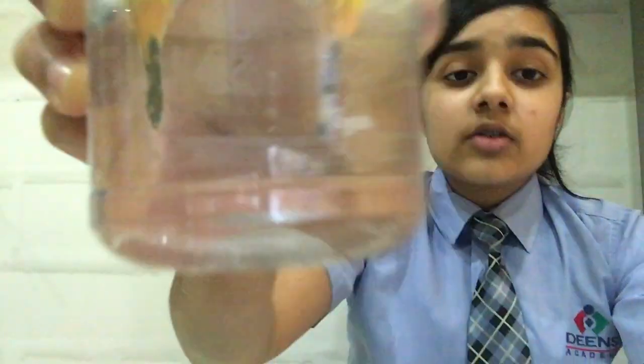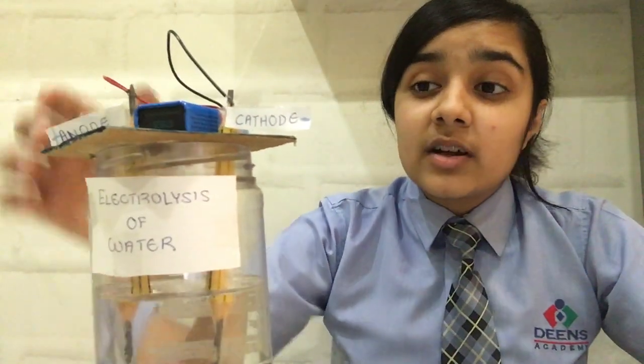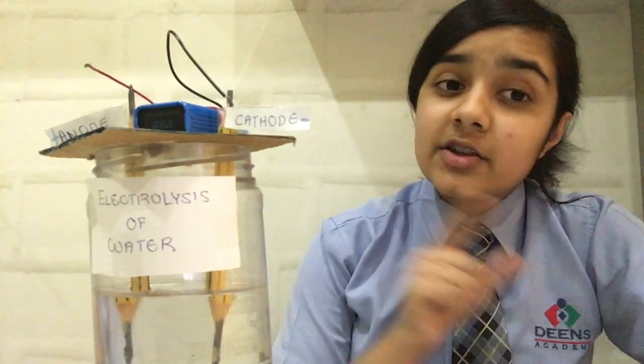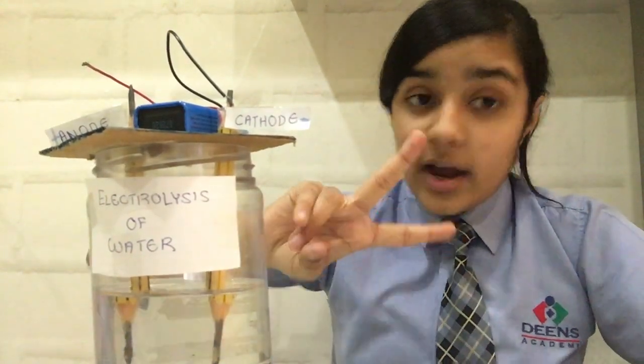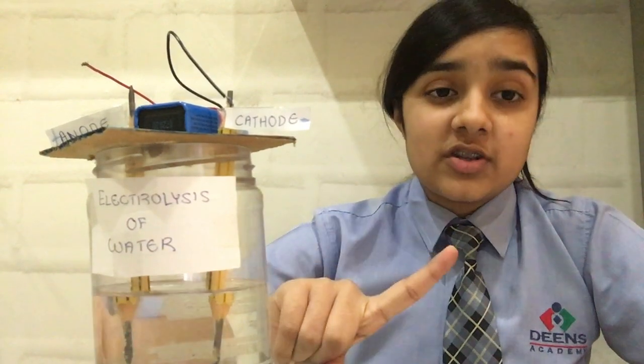As you can see, the hydrogen gas is being produced more than the oxygen gas. The reason behind this is because in the chemical formula H2O, there are two hydrogen molecules and only one oxygen molecule.